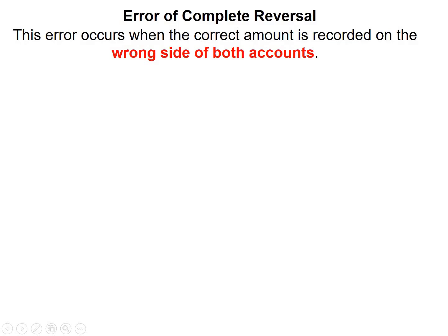The next error we will have a look at is the error of complete reversal. This error occurs when the correct amount is recorded on the wrong side of both accounts. Let's have a look at an example.